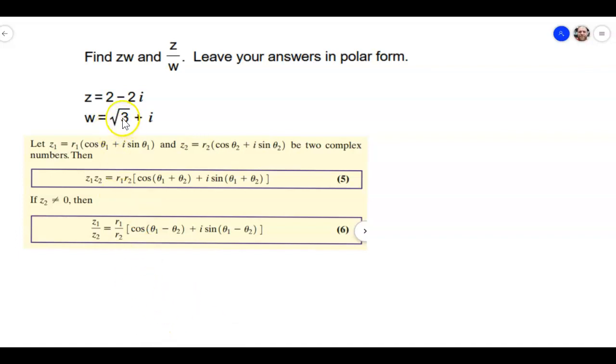So let's go ahead and start solving for our stuff. So to find the radius, which is the magnitude of these, we just use that distance formula. So for the first one, for the z, that's going to equal the square root of, and it's 2 squared plus negative 2 squared. Remember, we're just using that distance formula, and this is the distance from the origin.